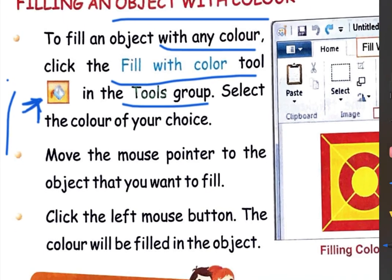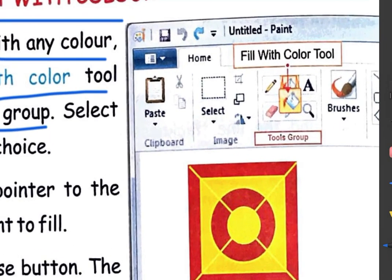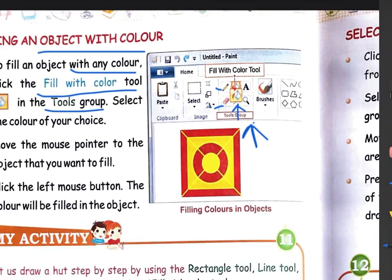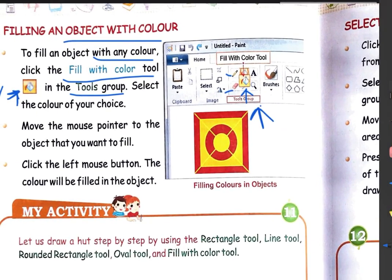In the tool group, you can find and select the 'Fill with Color' tool. तो आप इस color tool को select कर लीजिए, and then select the color of your choice. उसके बाद अपने colors choose कर लीजिए कि आपको कौन सा color choose करना है, किस color से आपको picture draw करनी है।